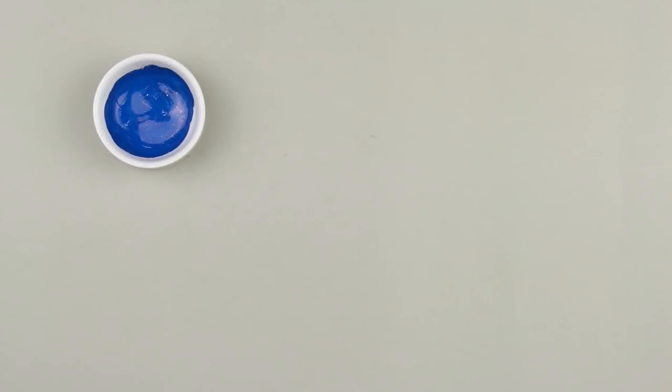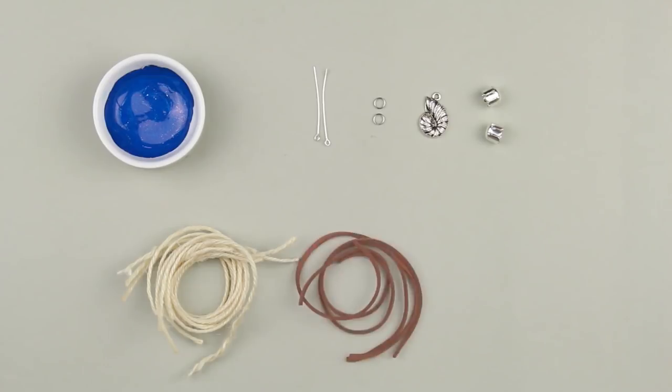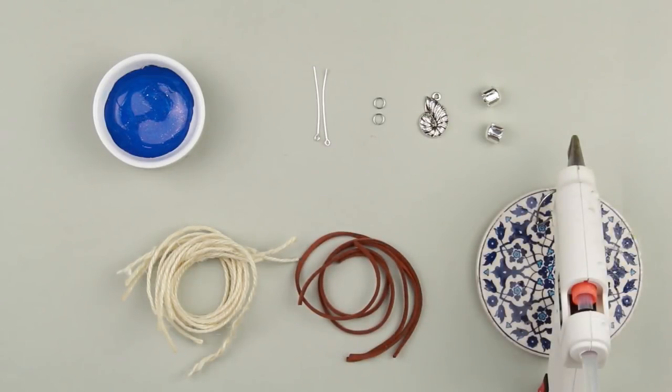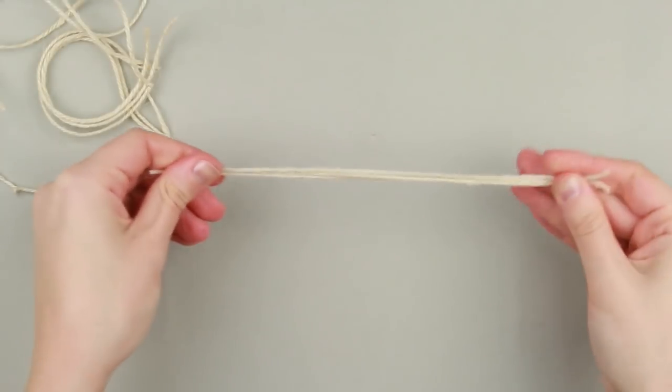We'll need blue acrylic paint, supply pins, a shell-shaped metal charm, supply caps, several pieces of thin rope, suede cord, and a hot glue gun.